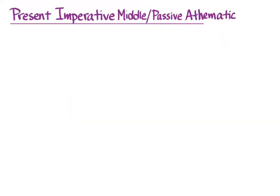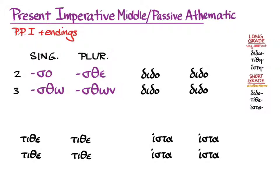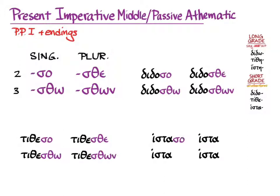The present imperative middle/passive for athematic verbs comes from the first principal part. Those endings are the person markers without thematic vowels for the middle/passive imperative. We're going to use the short-grade stems and simply put those endings on. It's quite regular. With recessive accent, we get: δίδοσο, διδόσθω, δίδοσθε, διδόσθων; τίθεσο, τιθέσθω, τίθεσθε, τιθέσθων; ἵστασο, ἱστάσθω, ἵστασθε, ἱστάσθων.